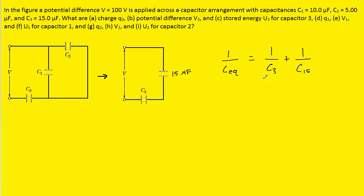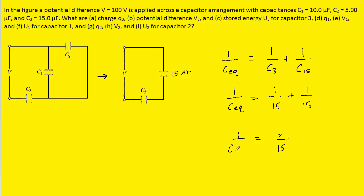When capacitors are in series, we use basically the same equation except everything is reciprocated. We fill in the value for C3, which is 15 microfarads, and then the 15 microfarad equivalent capacitor. Adding the two fractions on the right-hand side gives us 2 over 15. Flipping both sides of the equation, CEQ equals 15 divided by 2, which is 7.5 microfarads.